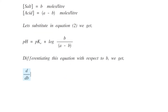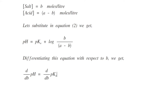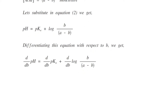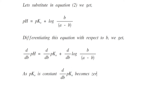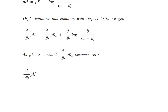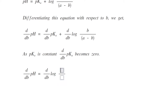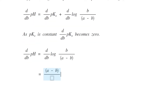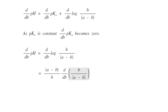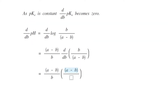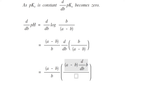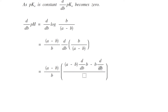Differentiating this equation with respect to b, we get d(pH)/db equals d(pKa)/db plus d/db of log of b by (a minus b). Since pKa is constant, d(pKa)/db becomes zero. Therefore d(pH)/db equals d/db of log(b / (a minus b)), which equals (a minus b) divided by b, multiplied by d/db of (b / (a minus b)).